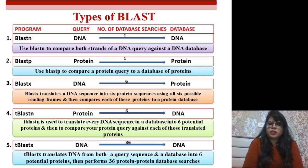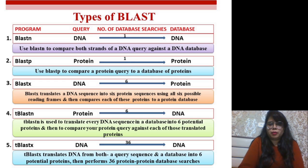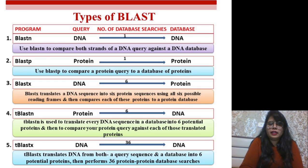tBLASTx uses a DNA query and a DNA database, but translates both into all six possible reading frames. You get six frames from the query and six frames from the database, so the total number of searches is six times six, which equals 36 database searches.